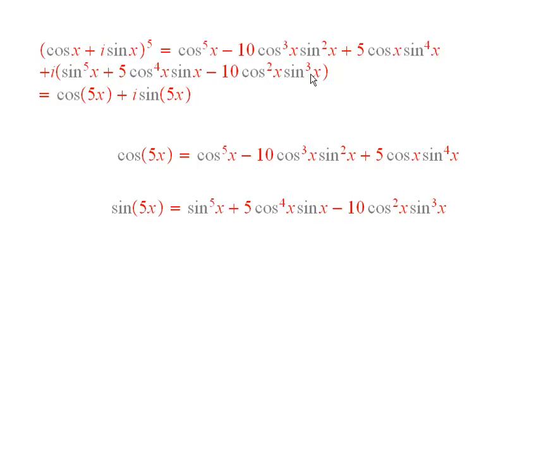How do you find that out? Well, you just use Pascal's Triangle, or the Binomial Theorem. Just remember, wherever i squared, it's equal to negative 1. And so you end up with this plus i times this.